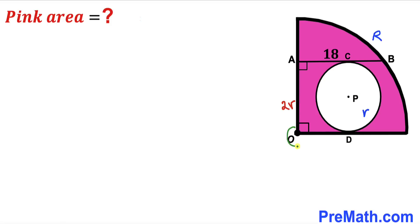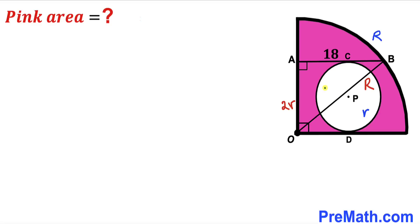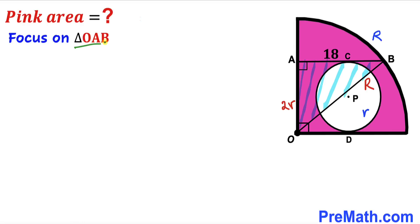In the next step, I'm going to connect center O with point B. We can see that OB is the radius of the quarter circle, so I'll label it as uppercase R. Therefore we have right triangle AOB with side lengths 2r, 18, and R.